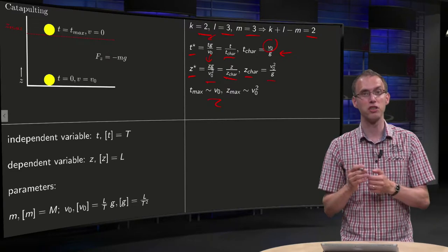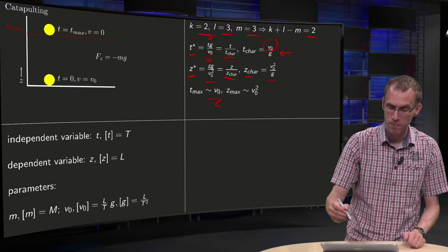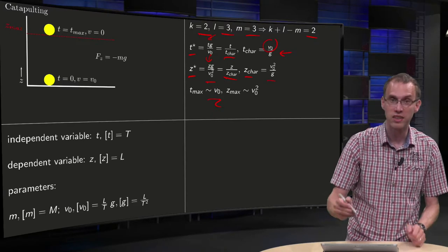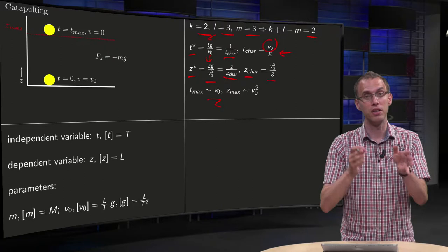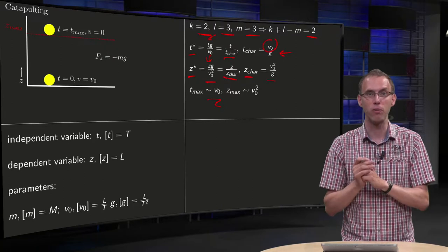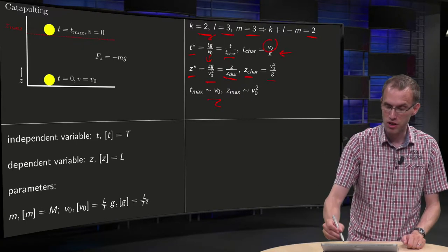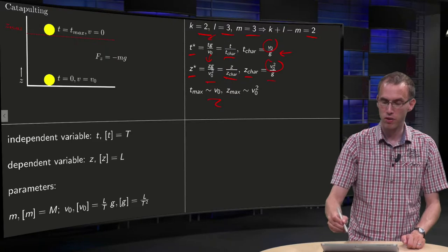So if you double the initial velocity, the t_max will also double. You see something similar for your z. So your z will be z* times z_char, z* will be some number of order 1, so your z_max will scale like v0 squared.